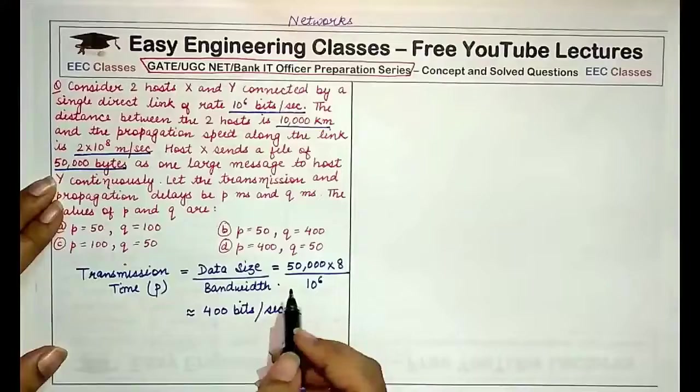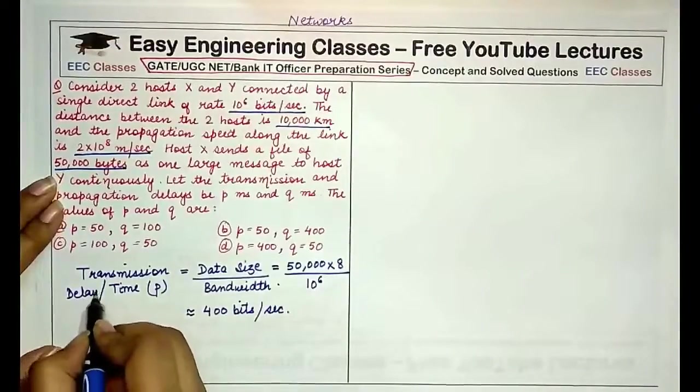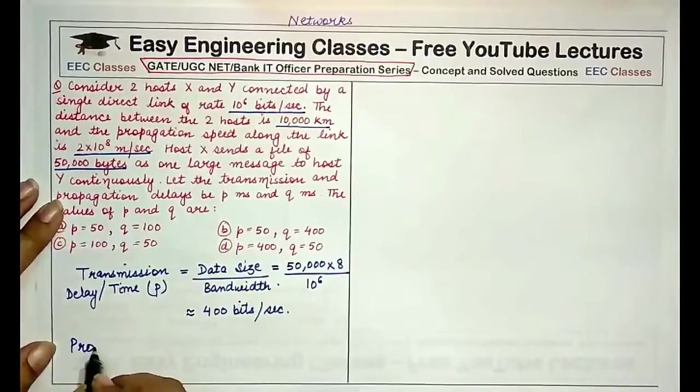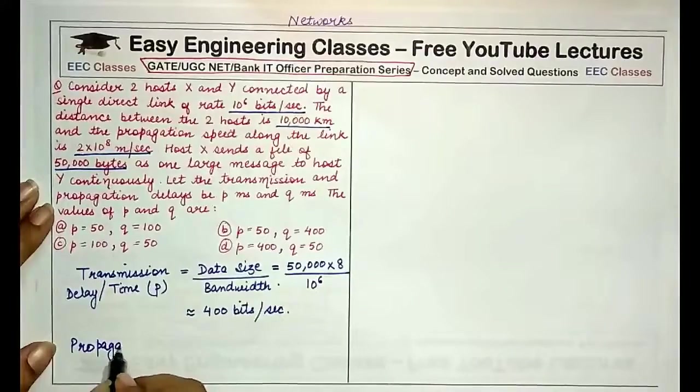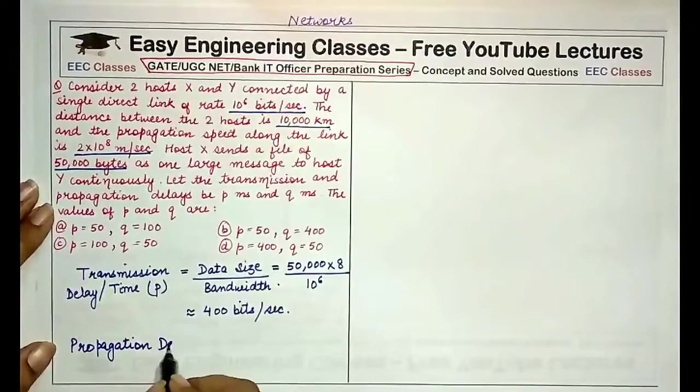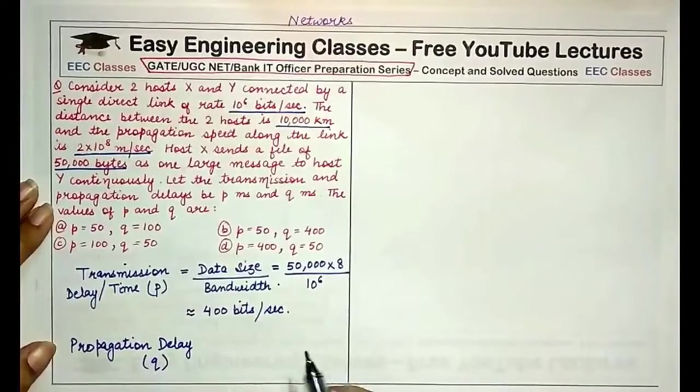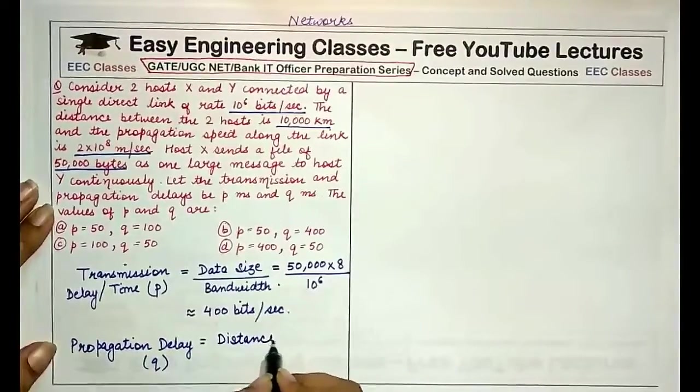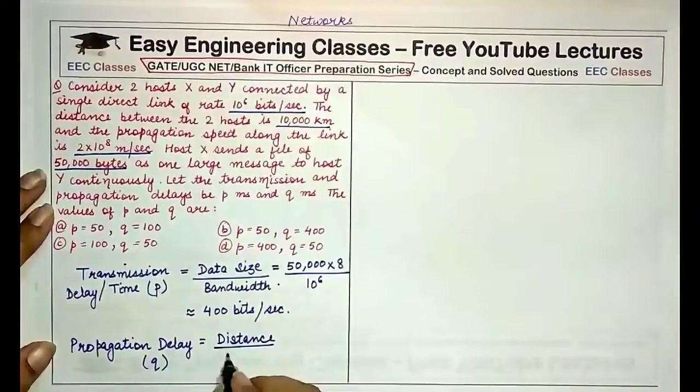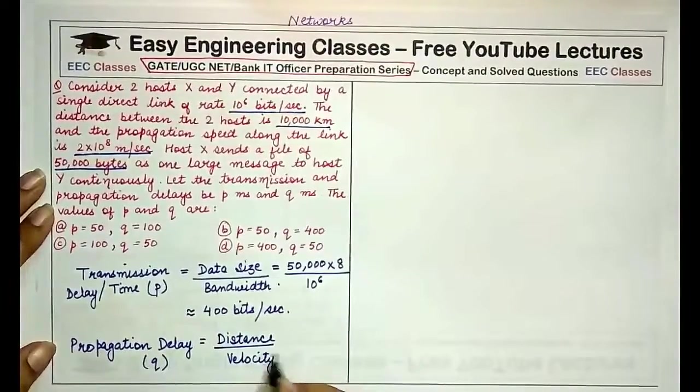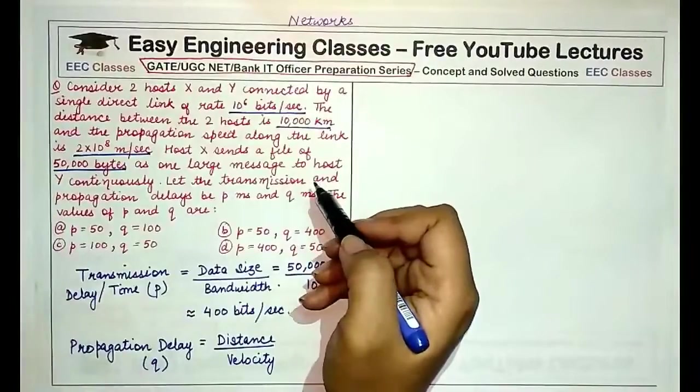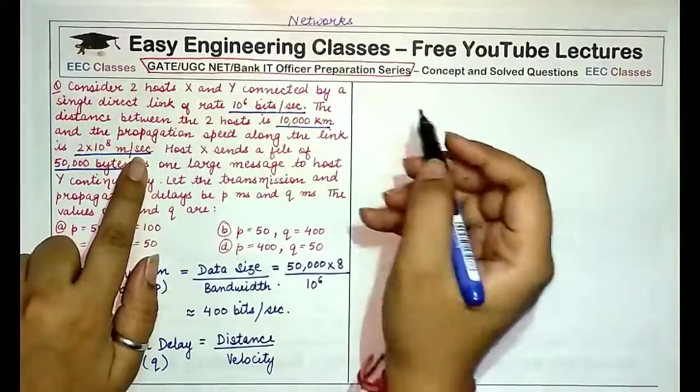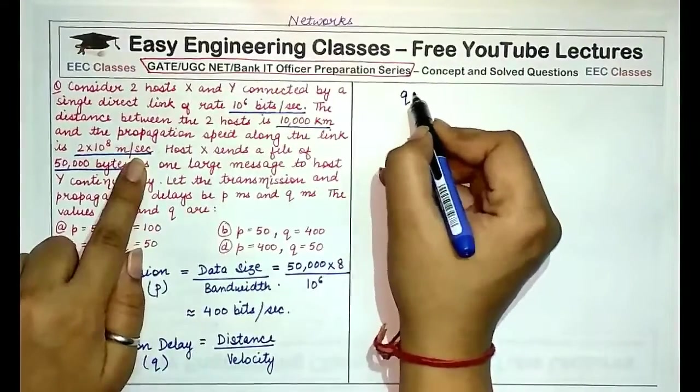All right, now this is the amount of transmission delay or transmission time that would take, that would be seen between these two hosts. Now the second thing that we have to calculate is propagation delay. Again, for propagation delay, you can remember a simple formula which is equal to distance upon velocity or speed. So here the distance that has to be traveled between the two hosts is 10,000 km, and the velocity or the speed between the link that connects both these hosts is 2×10^8 meters per second.